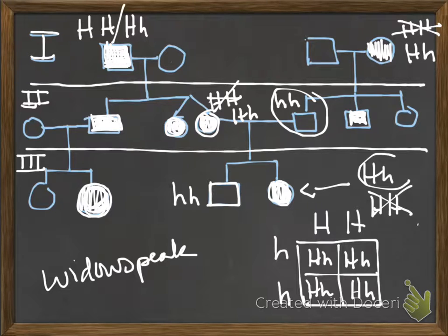If we look at this lady and we know it's big H, big H, or big H, little h, and we look at her offspring and there are some who don't, that tells us it's heterozygous. If this was a recessive trait, let's actually do one for a recessive trait.